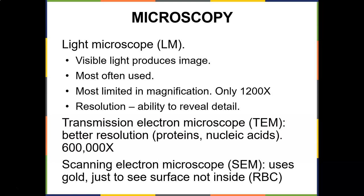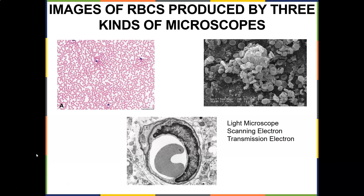A transmission electron microscope, or TEM, has better resolution, so you can see proteins, nucleic acids, at up to 600,000x magnification. Scanning electron microscopes use gold, but you can only see the surface, not the inside. Here are images of red blood cells produced by three kinds of microscopes — the light microscope, the scanning electron microscope, and the transmission. With the scanning you can only see the surface, but the transmission gives you up to 600,000 times magnification.